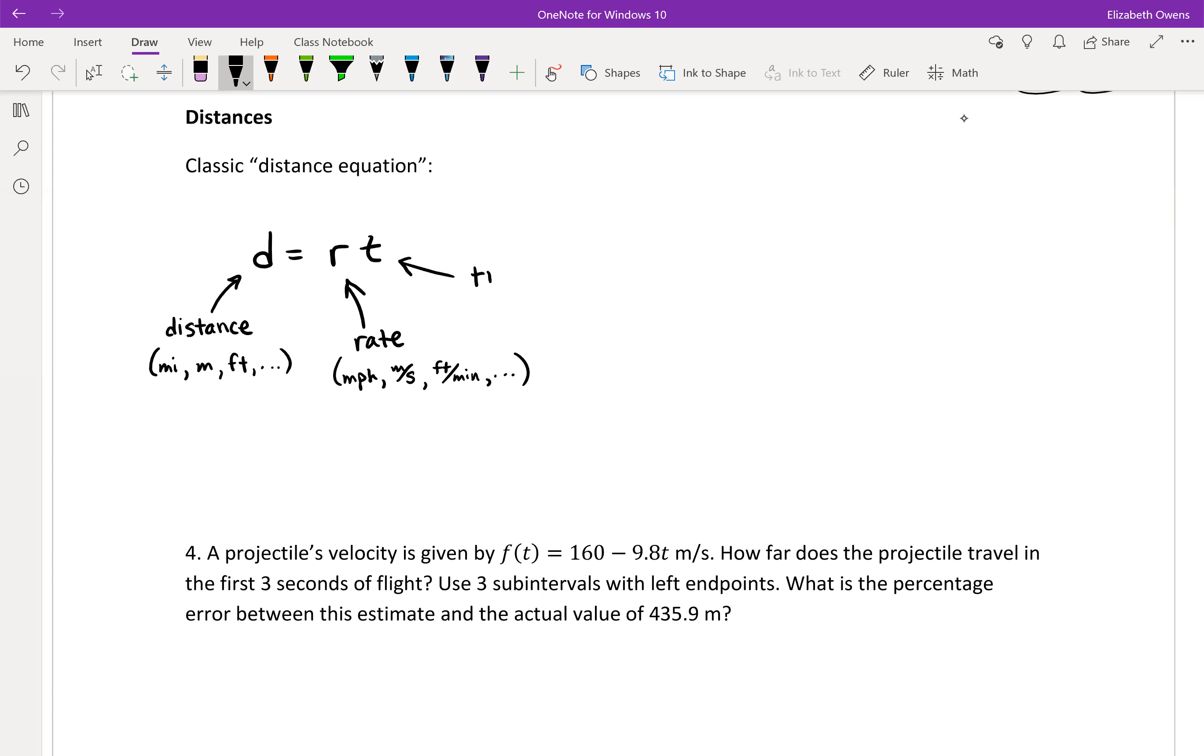And then T, of course, is for your time. And units for that might be like hours, seconds, minutes. We know the standard time measurements. So distance equals rate times time.